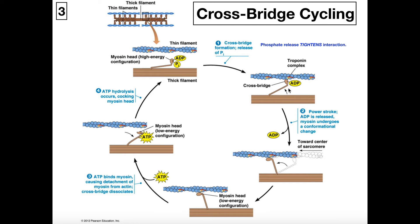Now we have the crossbridge, and then what we're going to see is the power stroke. During the power stroke, the myosin head actually rotates, and when it rotates it's going to move the thin filament — ultimately moving it toward the middle of the sarcomere. Overall, that means we get shortening of the sarcomere, because this is happening hundreds of thousands of times all along the thick filament. You have a bunch of myosin heads all pulling on the actin, pulling the thin filament toward the M line, and overall you have net shortening of the sarcomere.